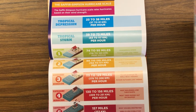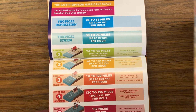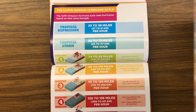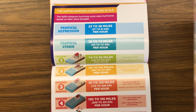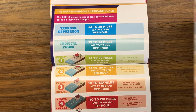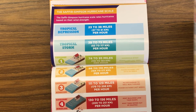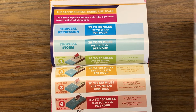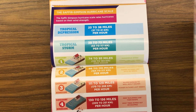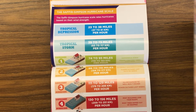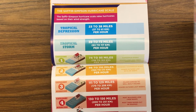The Saffir-Simpson Hurricane Scale rates hurricanes based on their wind strength. A tropical depression has winds of 23 to 38 miles per hour. A tropical storm has winds of 39 to 73 miles per hour.